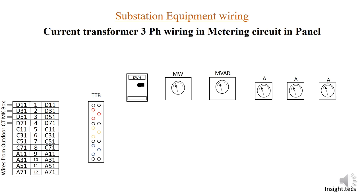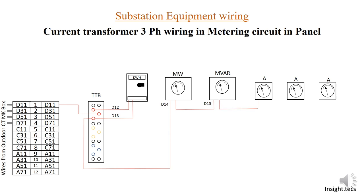Let us see how the connection is done for R-phase. From d11, one wire comes to the TTB. From the TTB, a connection is made to the energy meter — let us call that d12. Then there is another connection going from the energy meter back into the TTB, that is d13. Next, the megawatt meter is connected as d14, and d15 is the wire connecting the megawatt meter and the MVR meter. Next, the ampere meter is connected and that wire is called d16.